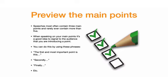Preview the main points. Speeches most often contain three main points and rarely ever contain more than five. When speaking on your main points, it's a good idea to signal to the audience that you are introducing a point. You can do this by using these phrases: 'The first and most important point is this,' 'Secondly,' 'Finally,' etc.